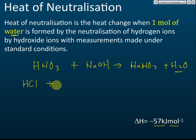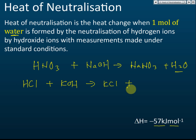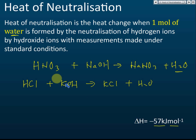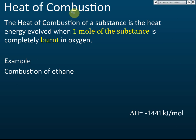Another example: HCl reacts with potassium hydroxide to form potassium chloride and water. The heat released is also 57 kilojoules per mole of water. As long as one mole of water forms in the neutralization reaction, it will release 57 kilojoules, no matter what acid or alkali is used.